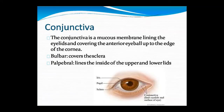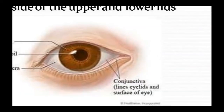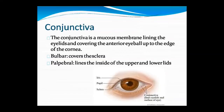Next is the conjunctiva, which is a mucous membrane. It lines the eyelid and covers the anterior eyeball up to the edge of the cornea. This membrane is called conjunctiva. It has two parts: bulbar, which covers the sclera, and palpebral, which lines the upper and lower lids. You can see the white sclera covered by conjunctiva in the diagram.